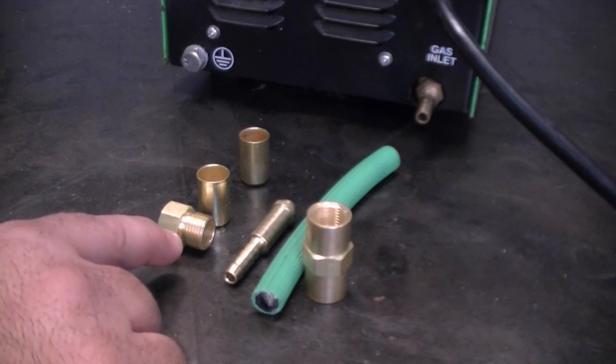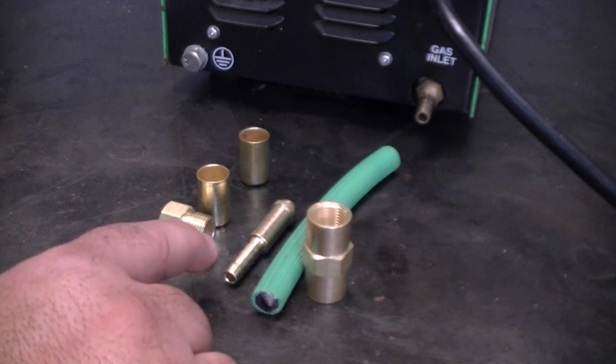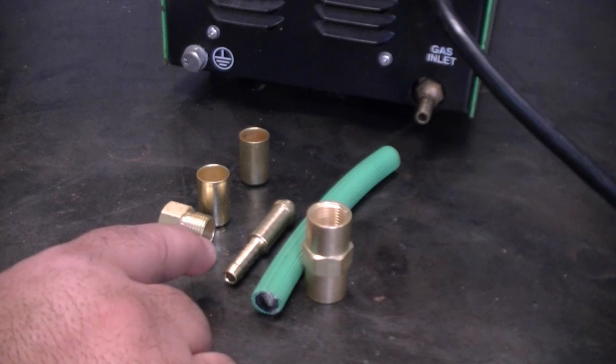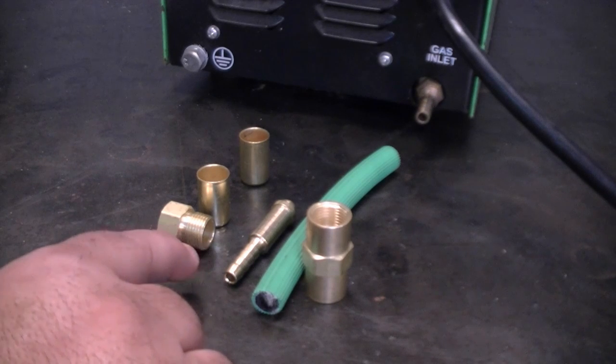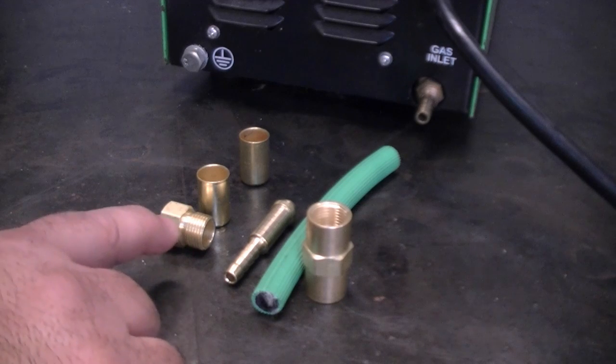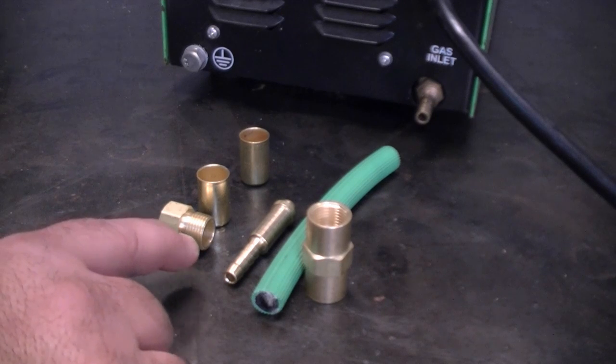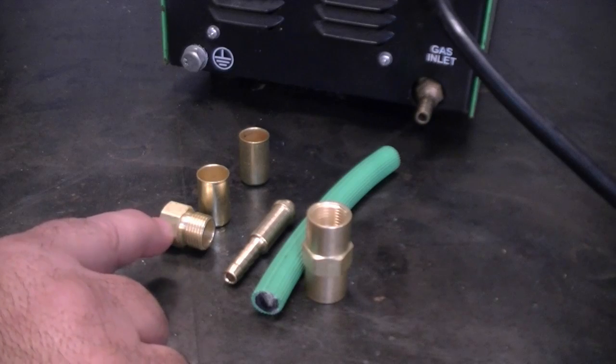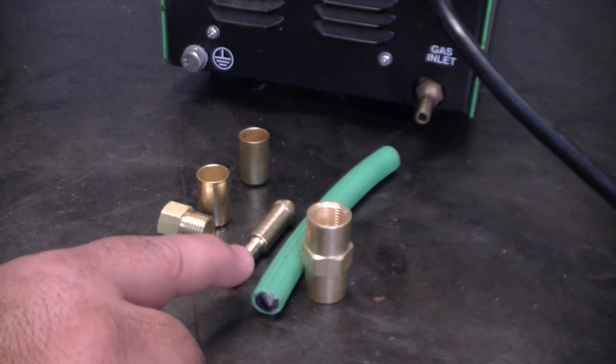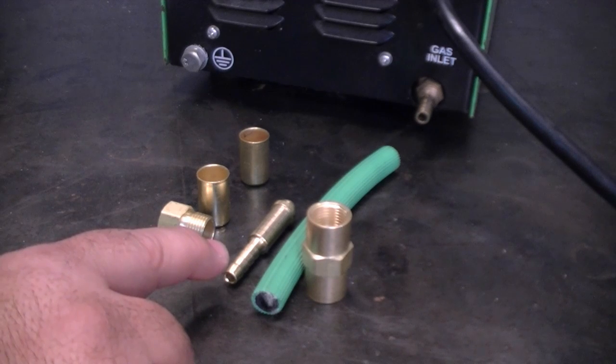As we said earlier, this isn't the standard type fitting you're going to find on a lot of your argon regulators. What I've laid out here are the components that you'll actually need to make this conversion. Now this is fairly cheap, and for less than six or seven dollars you can make this conversion. These fittings are actually available at most local welding supply stores. In fact, this is what I bought at my local one here, and this is stuff that they keep in stock all the time.